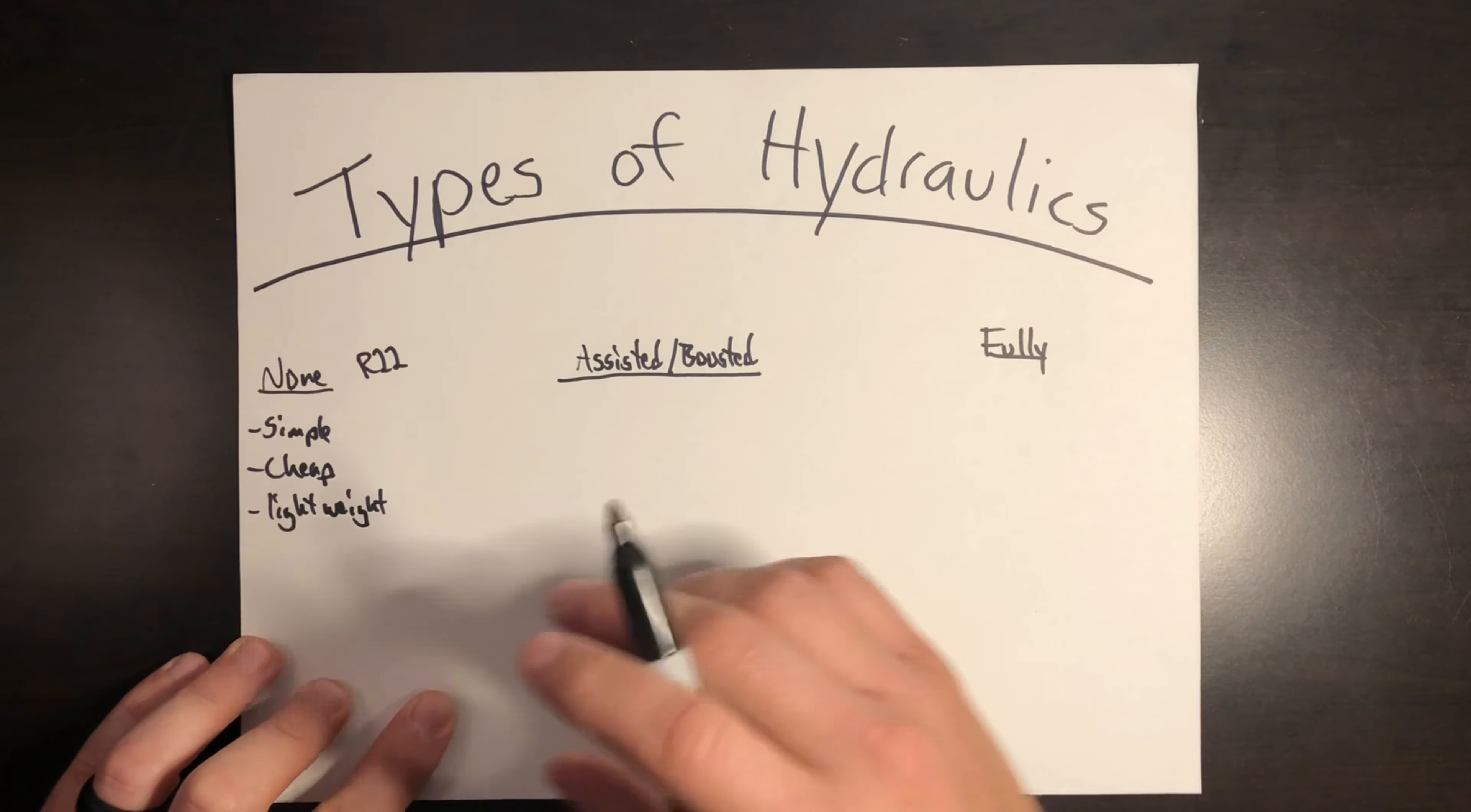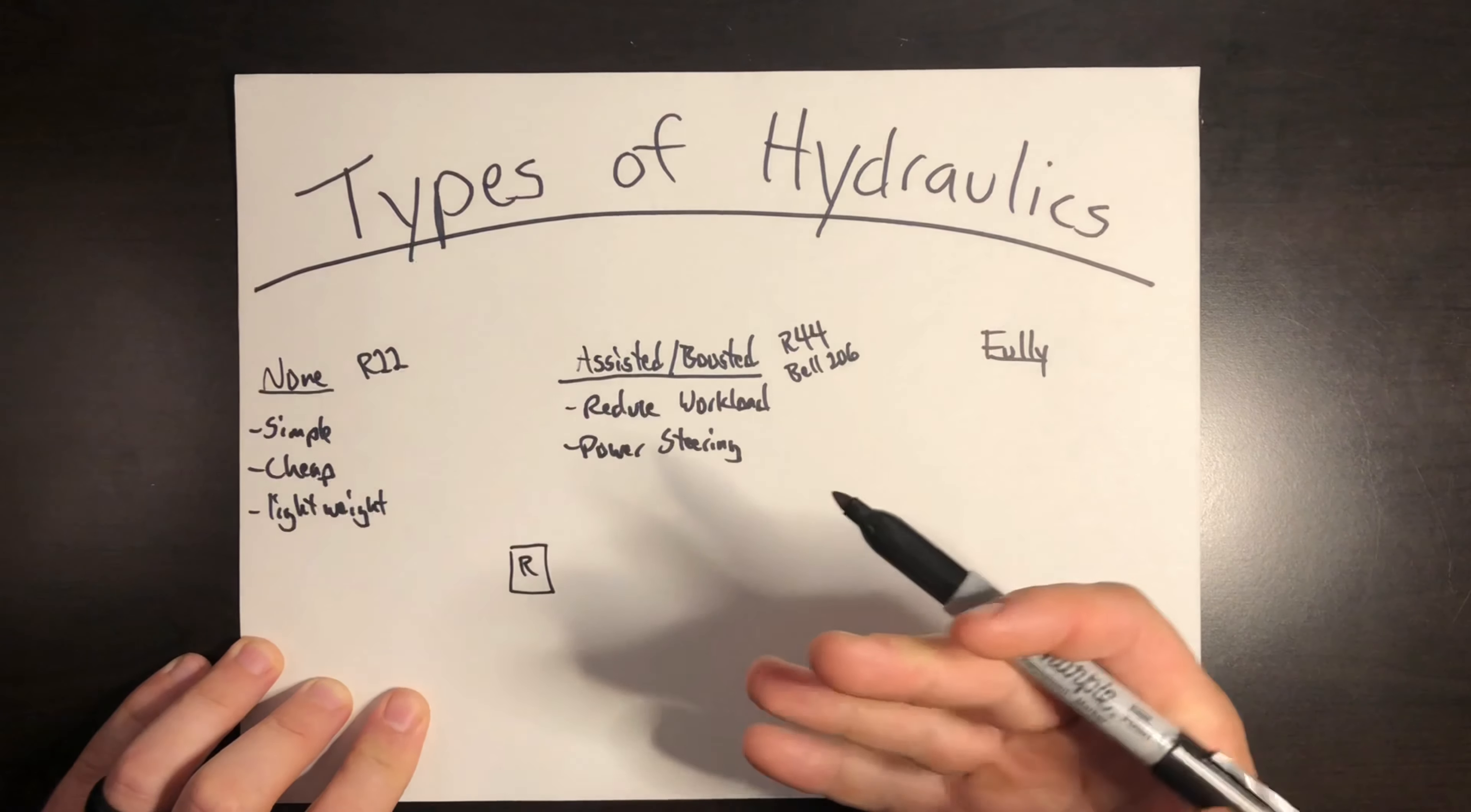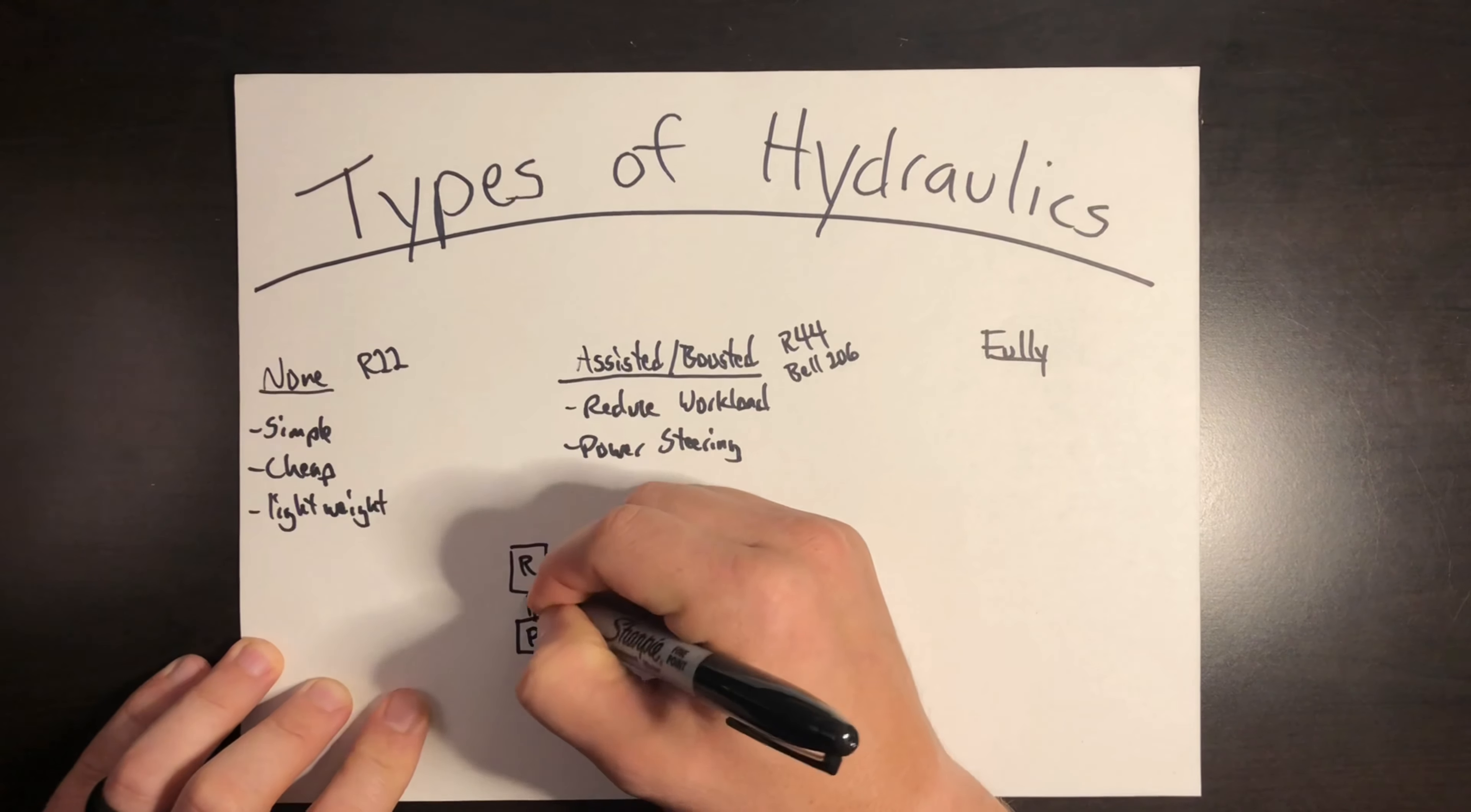So something like the R-44, which was actually originally designed like the R-22 without it, but they found that it was a little bit more workload on the pilot. So they incorporated a hydraulically assisted system into the R-44. Also, something like the Bell 206, also known in the military as the TH-67 or the OH-58, it had this type of design. If you were to turn the hydraulics off or if it was a failed state, you could still move the flight controls. It's just going to require a little bit more force.